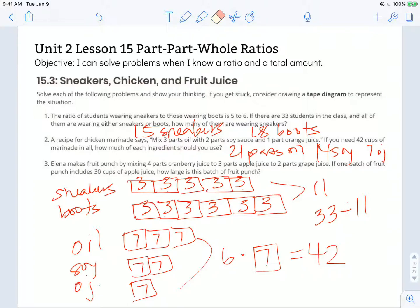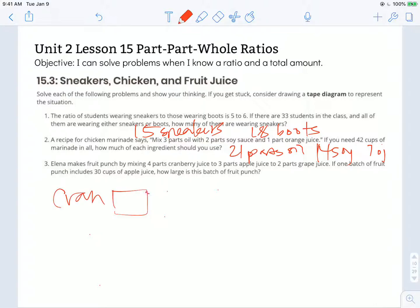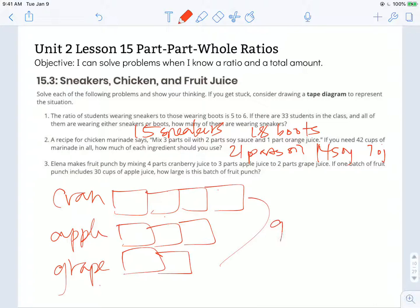I'm looking at number 3. Elena mixes fruit punch by mixing 4 parts cranberry juice to 3 parts apple juice to 2 parts grape juice. So I need 4 parts of cranberry, and 3 parts of apple, and 2 parts of grape juice. So that means I have 4, 7, 9 parts total.